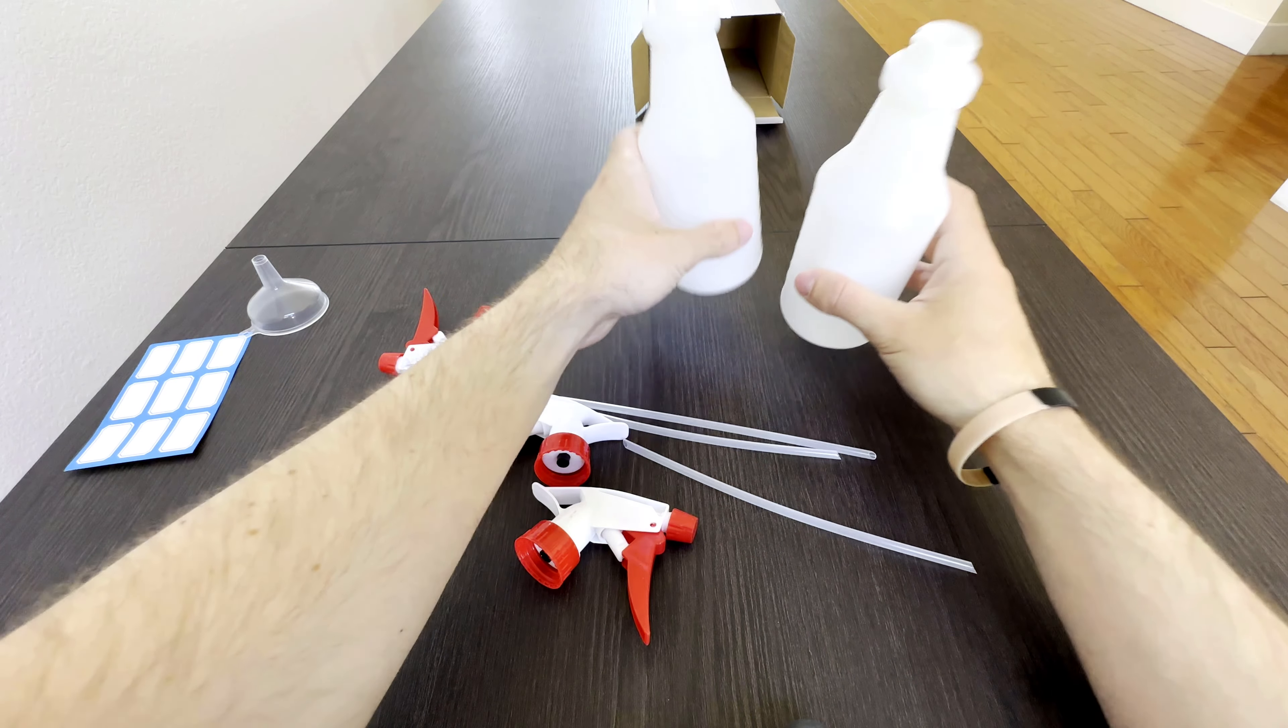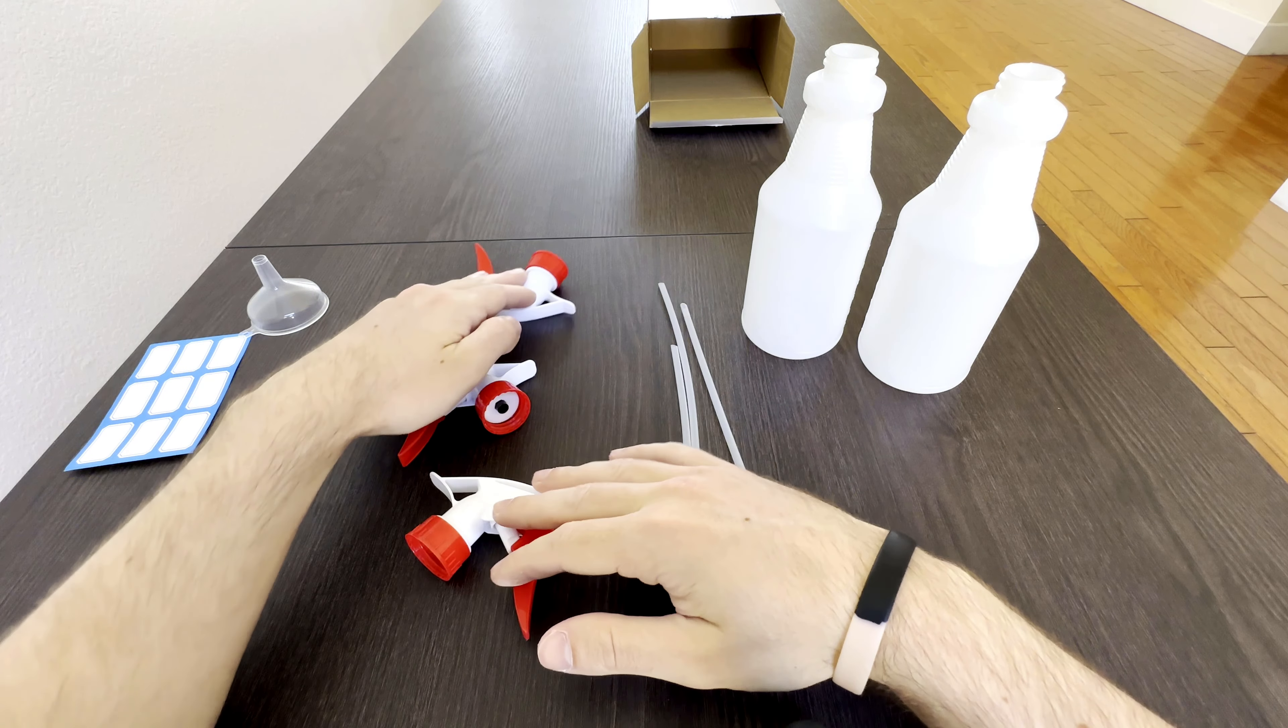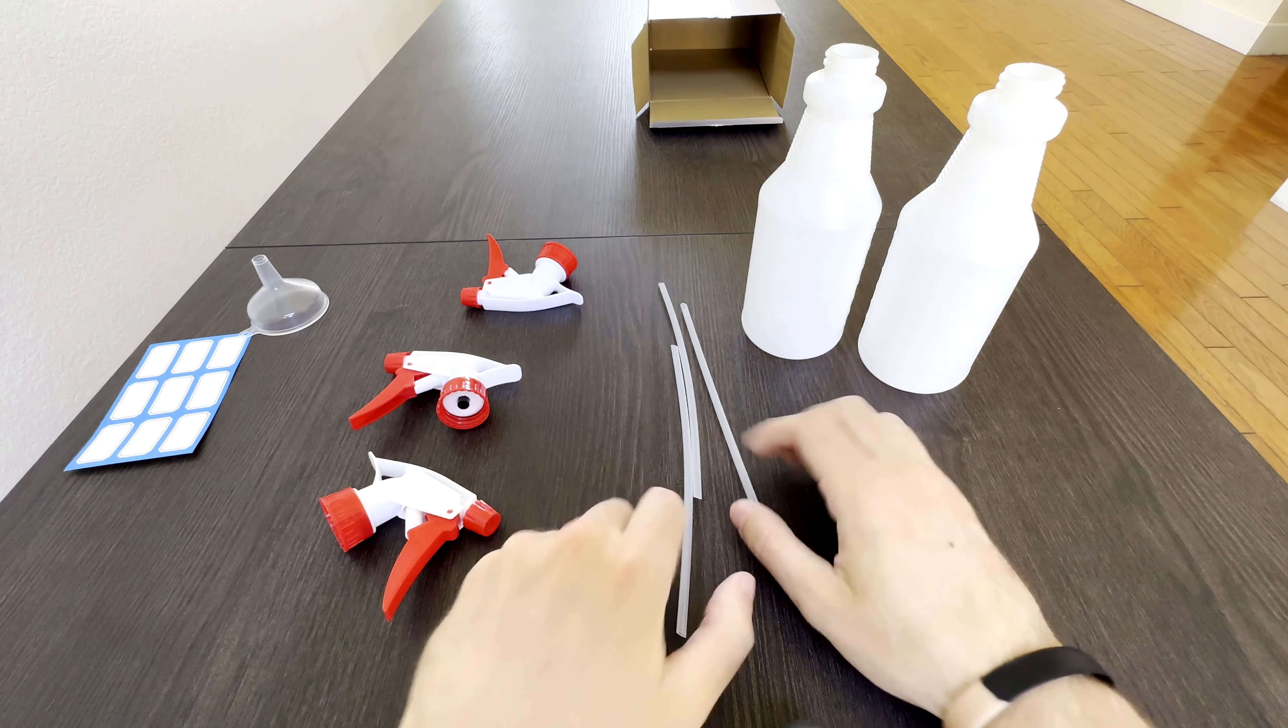As you can see in the video, the stream mode has pretty good range. I would say 6 feet or so before any fall off. Some people like to use these for blasting insects, so having a good range is nice.